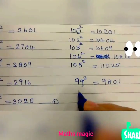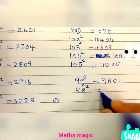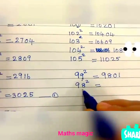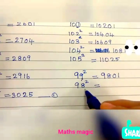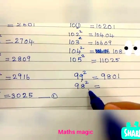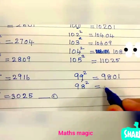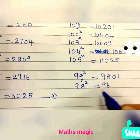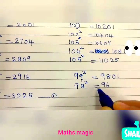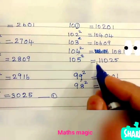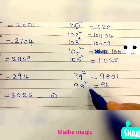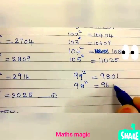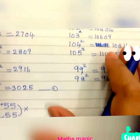For 98 squared: 100 minus 98 is 2. Double 2 is 4, so subtract 4 from 100: 100 minus 4 is 96. We subtracted 2 from 100, so take the square of 2, which is 4, written as 2 digits: 04. So 98 squared is 9604.